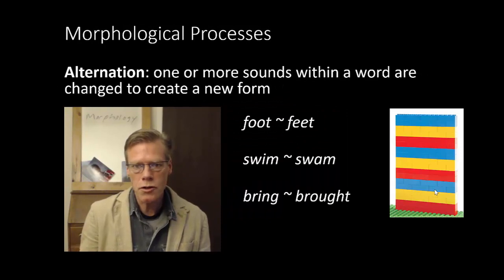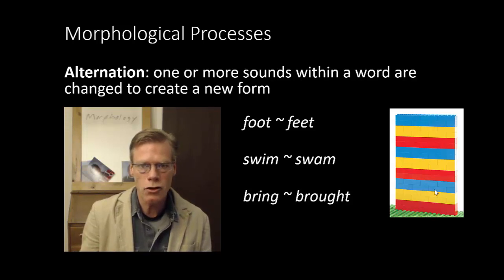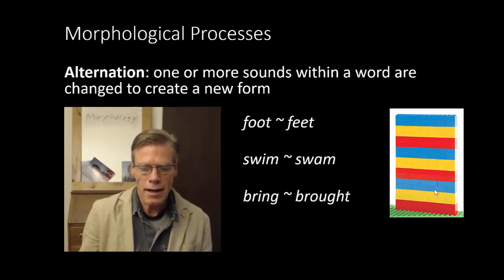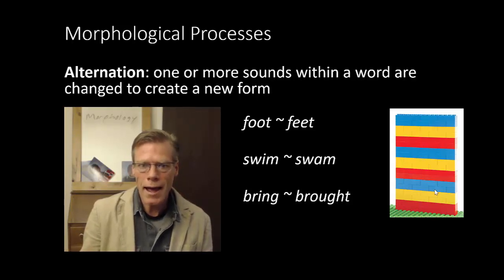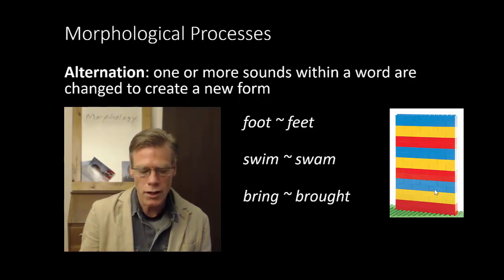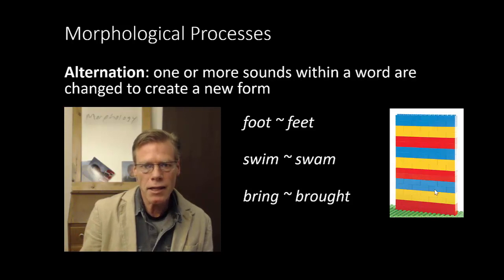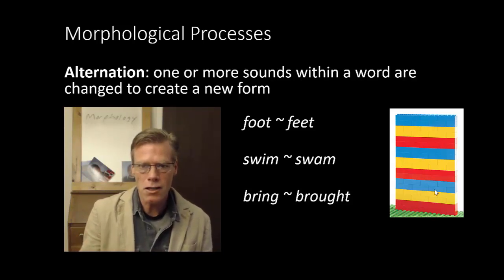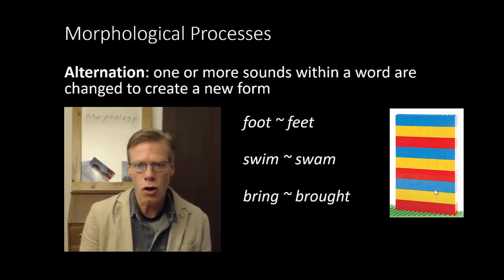Alternation is where, rather than having an affix added to a root, we change some sound within the root. For example, 'foot' becomes 'feet' in the plural by changing the vowel. Similarly, the past tense of 'swim' changes the vowel to become 'swam.' We see an even broader alternation in 'bring' versus 'brought' — they both start with the consonant cluster 'br,' but there's a large difference in the final part: '-ing' versus '-ought.' We'd still call that an alternation.